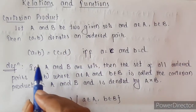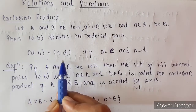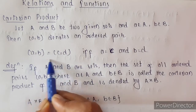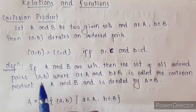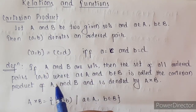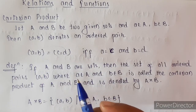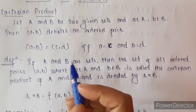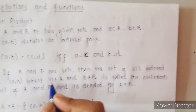When can we say two ordered pairs are equal? Two ordered pairs are equal if and only if a equals c and b equals d. Then only we can say two ordered pairs are equal; otherwise, two ordered pairs are not equal.